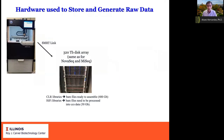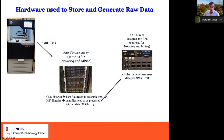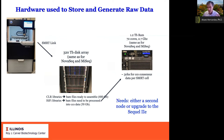After sequencing runs, we use the same infrastructure as for the NovaSeq — sending runs to a 320-terabyte disk array. CLR library files are large, about 400-gigabyte BAM files per flow cell. HiFi files are much smaller after circular consensus processing. Producing the CCS data from one SMRT cell takes about 30 hours using the same compute node we use for NovaSeq and MiSeq. With the push to produce more HiFi genomes, we are deciding whether to buy a second compute node or upgrade to the SQL2E, which has a better internal computer allowing real-time CCS processing.